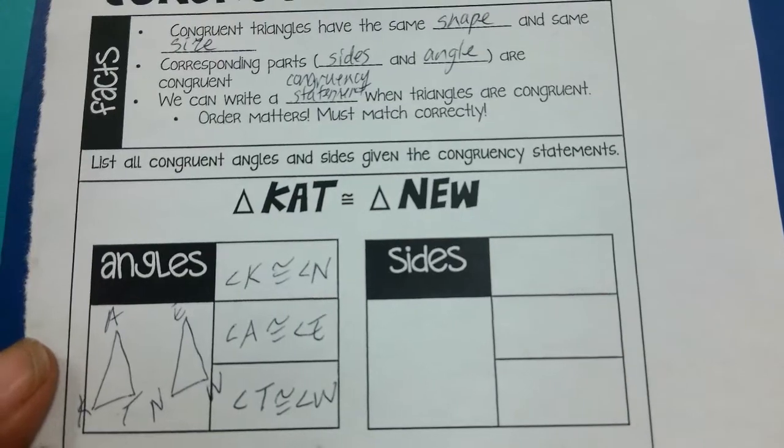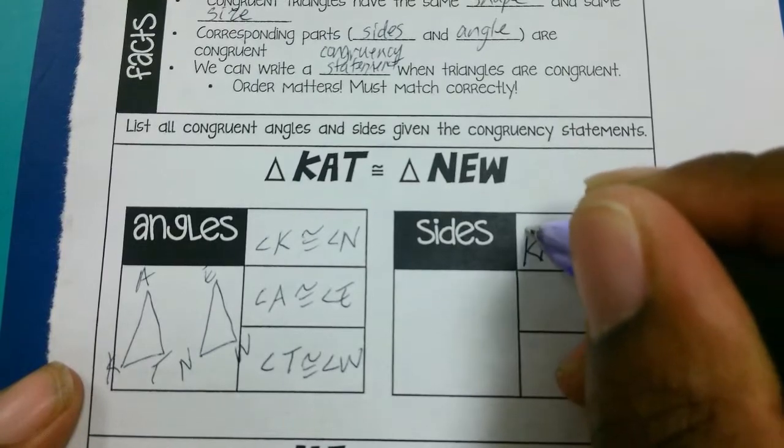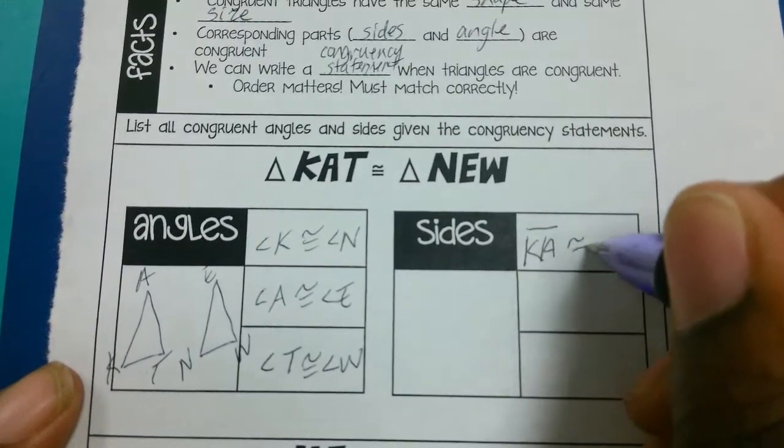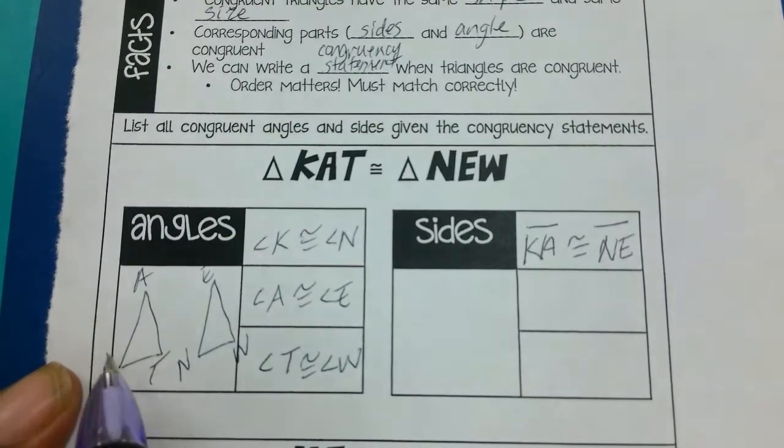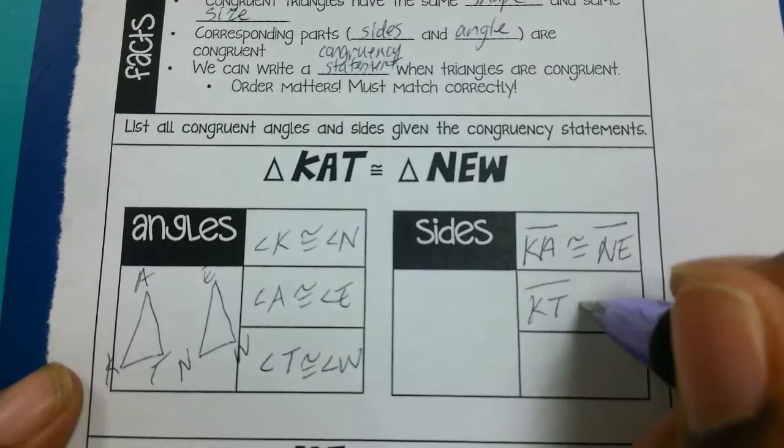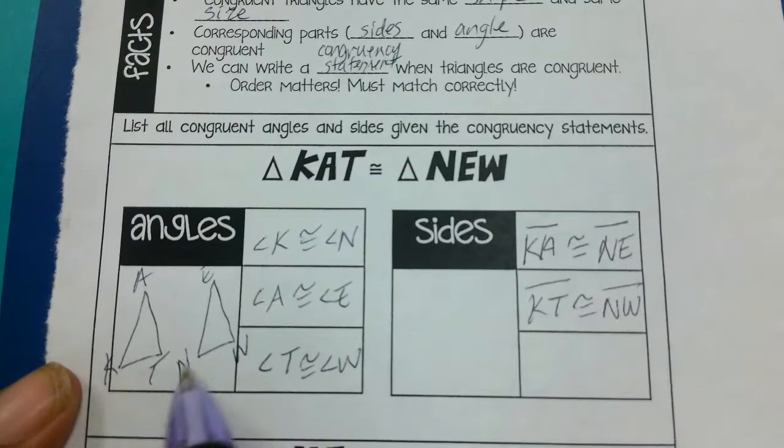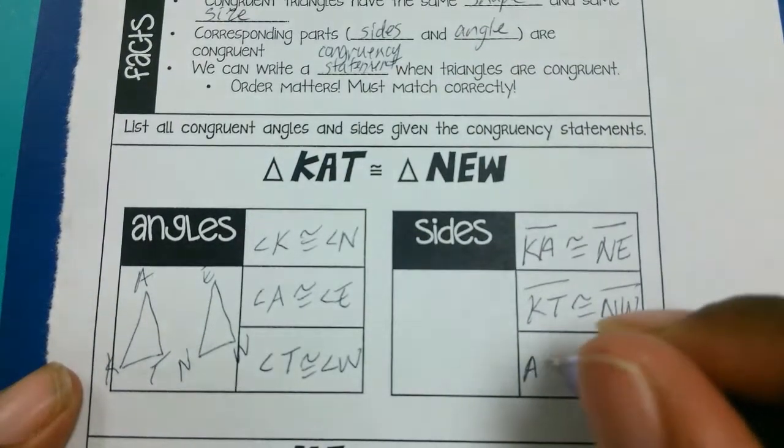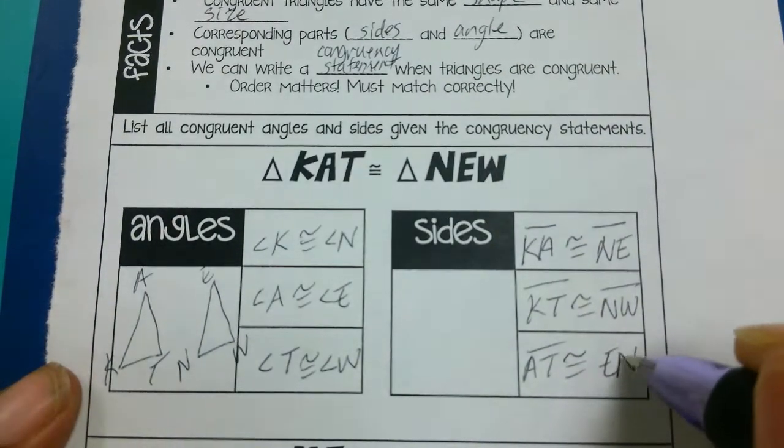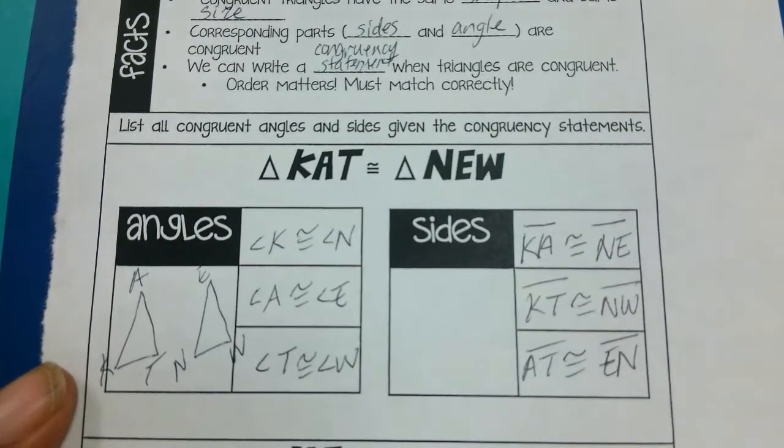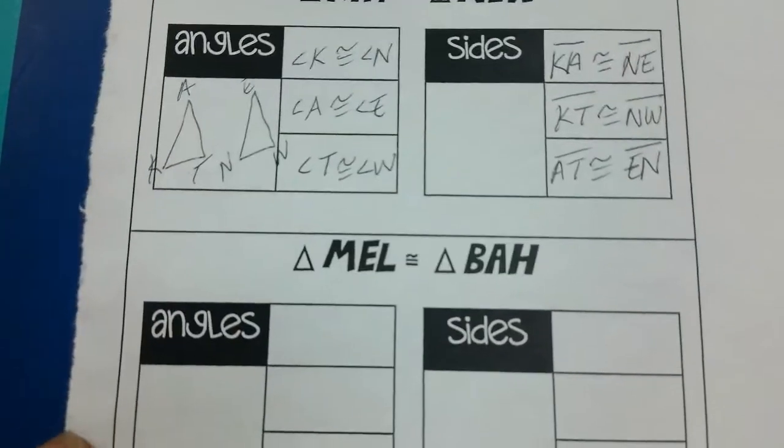I can do the exact same thing with the sides. So if I look, KA is congruent to NE, KAT is congruent to NEW, and AT is congruent to EW.